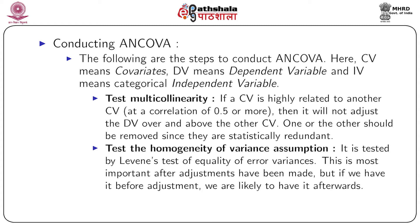For example, if you are regressing expenditure on both income and wealth, these two variables will be very highly correlated, leading to multicollinearity. One way to resolve this is by removing one of the highly correlated pair and fitting the model using only the other.